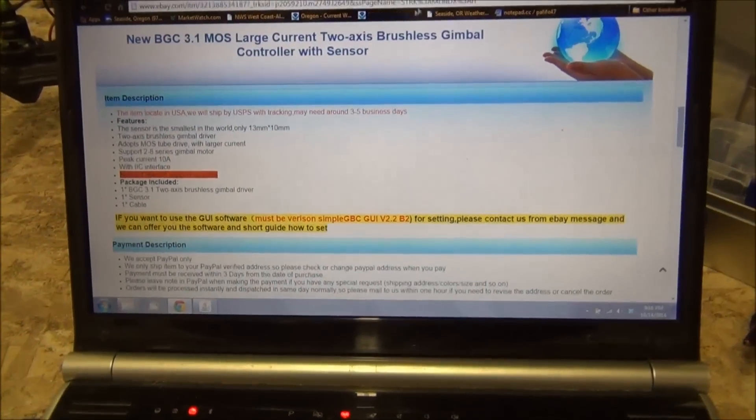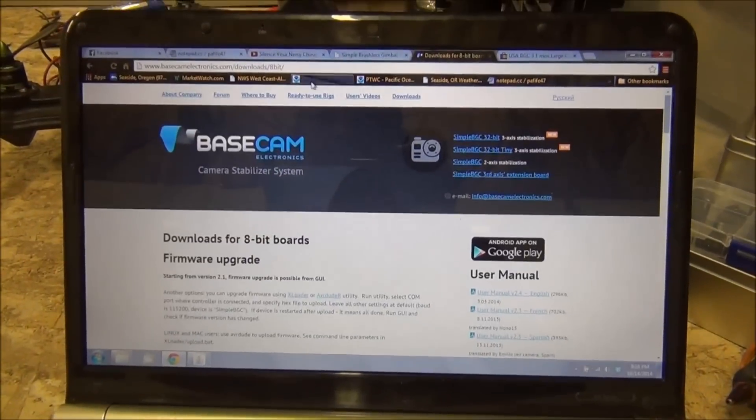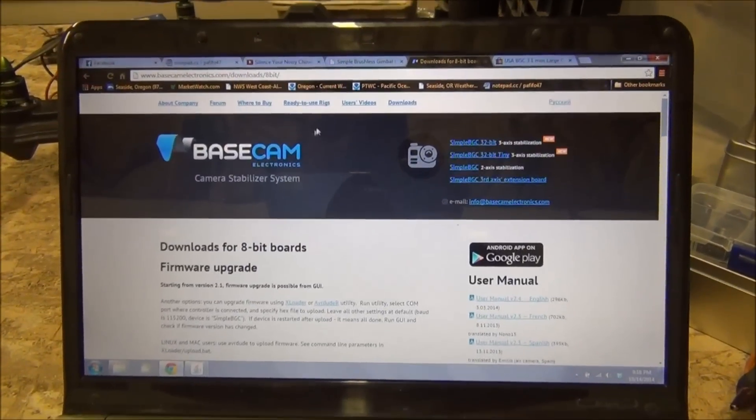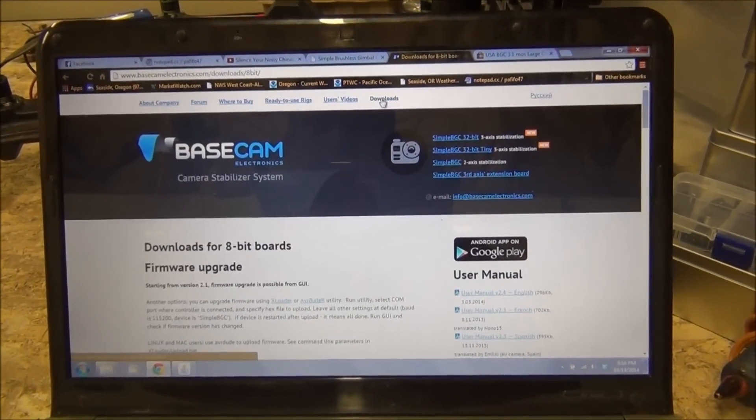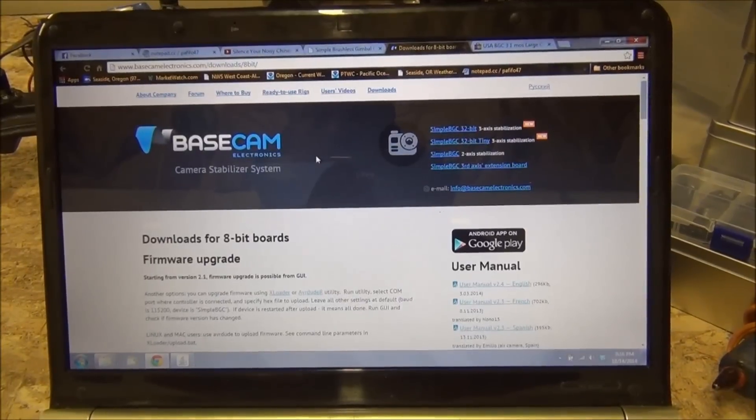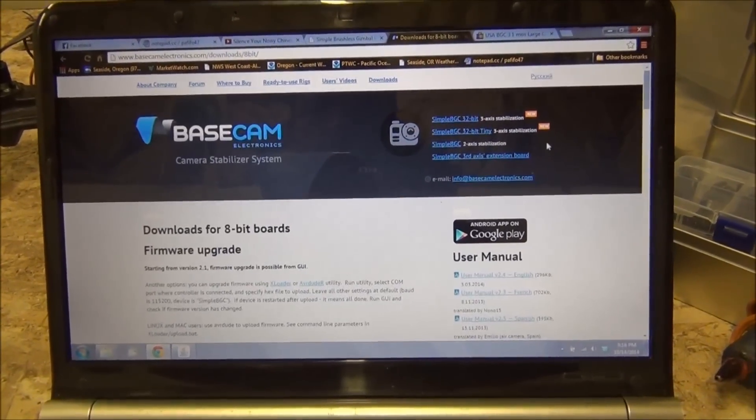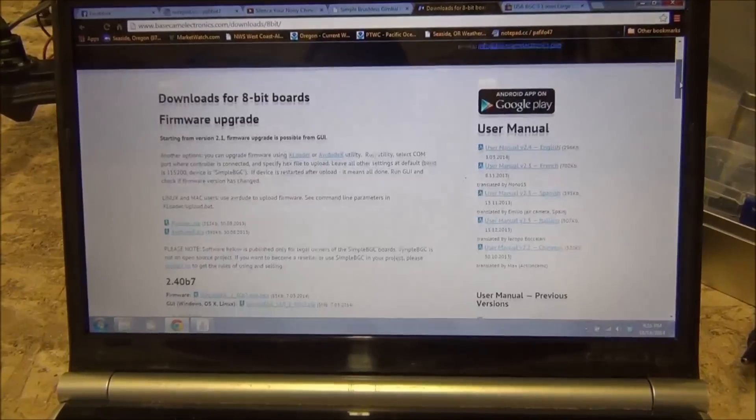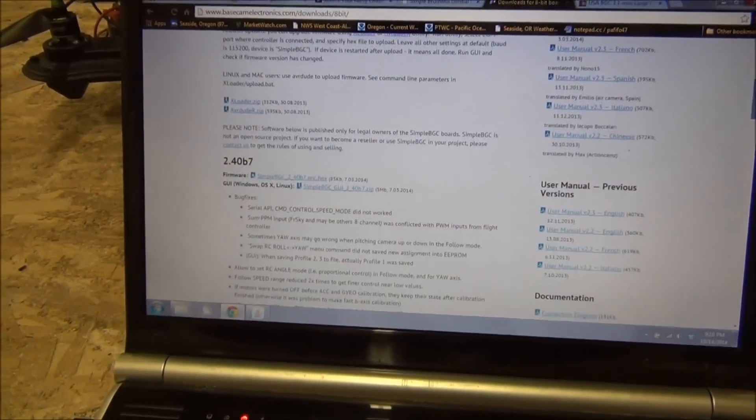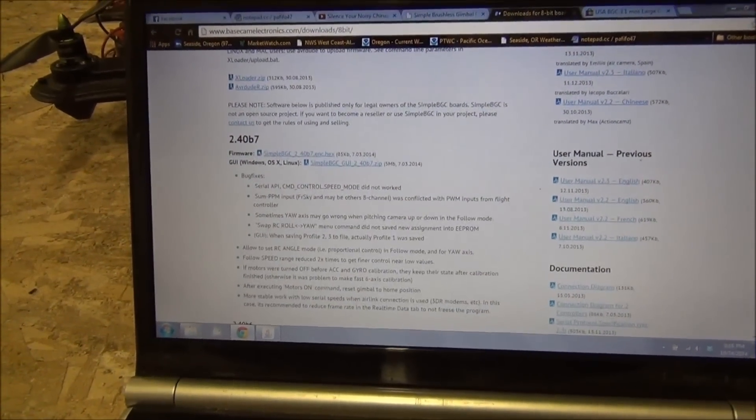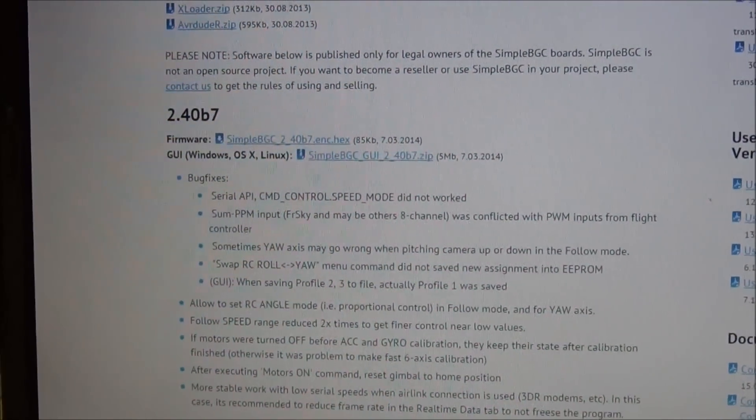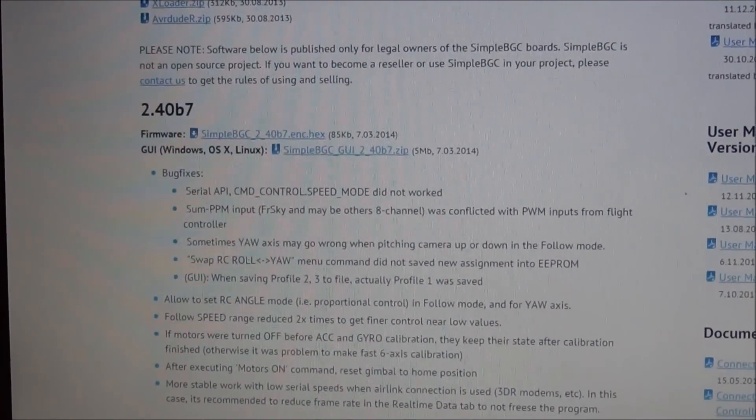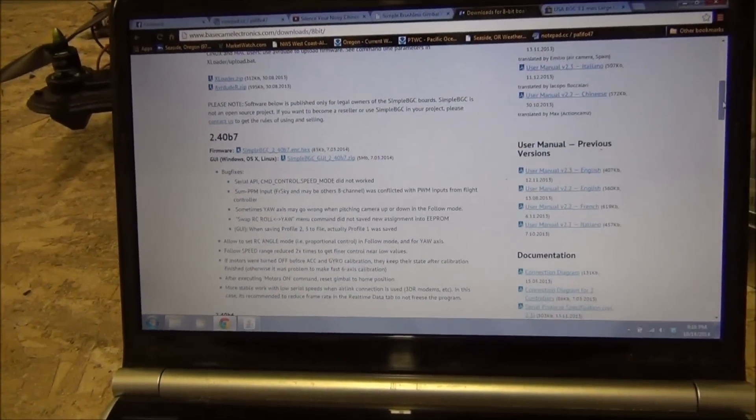So the way you get the most current version is you go here to BasecamElectronics.com, go to their Downloads section right up here, and this is an 8-bit board, so I went to the 8-bit board, and then it lists the firmwares and graphical user interfaces that you can download. This is version 2.40 Bravo 7 right here. So pretty easy to find and download.